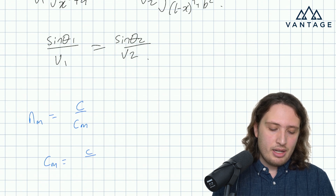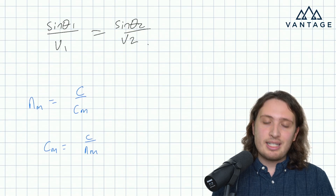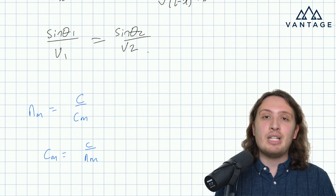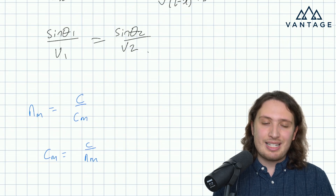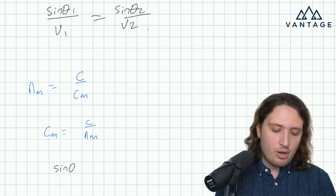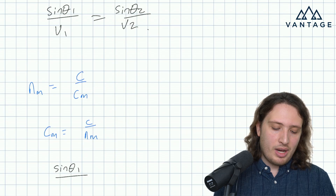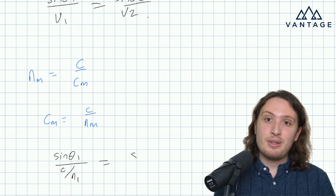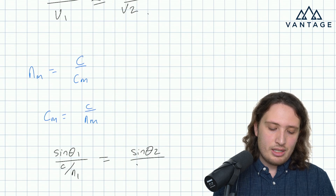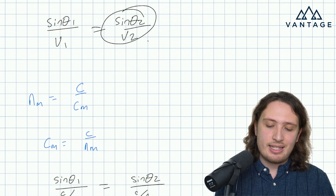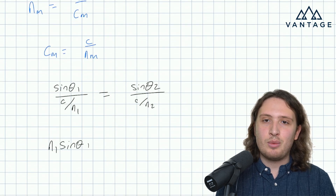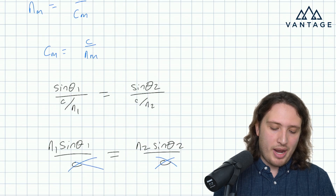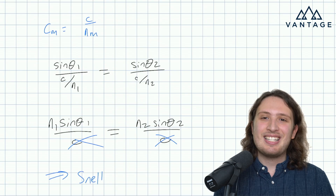We're trying to identify the refractive index of sand and the refractive index of water. Even though we don't have a real intuition for what c means in this analogy, it doesn't matter because it's going to cancel on both sides of the equation anyway. So we write: sine(θ₁) divided by (c/N₁), equals sine(θ₂) divided by (c/N₂). That gives N₁ sine(θ₁) over c equals N₂ sine(θ₂) over c. The c's cancel, and we are left with Snell's law: N₁ sin(θ₁) = N₂ sin(θ₂).